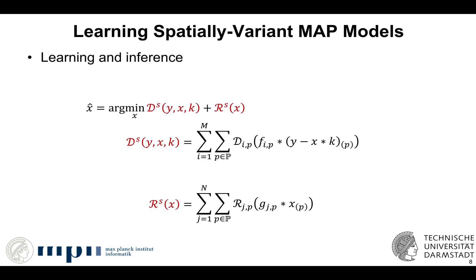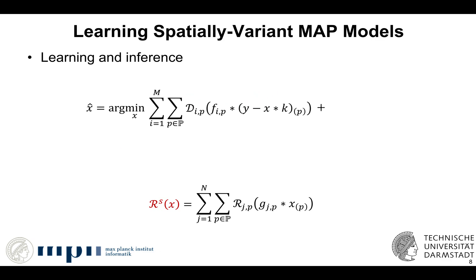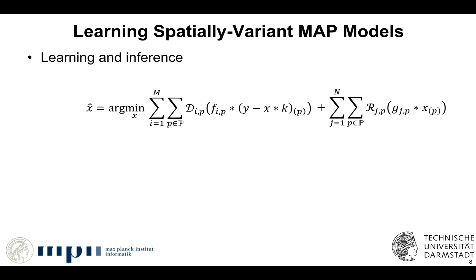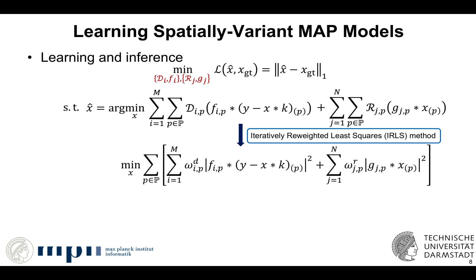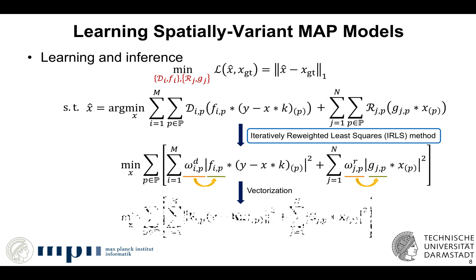We develop an end-to-end learning approach by integrating the MAP-based optimization framework as a constraint for the deep neural network. To solve the inner optimization problem, we adopt the iteratively reweighted least squares (IRLS) method and iteratively solve the weighted quadratic problem. Since both the weight omega and the filters f and g are pixel-dependent, the weight can be absorbed into the filters. We rely on deep neural networks to effectively predict the per-pixel filters f and g.